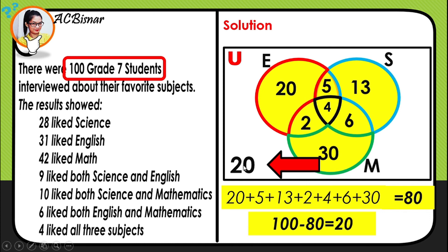We write the remaining 20 inside the universal set rectangle but outside all three circles, because these students were interviewed but did not choose any of the three subjects. That completes the Venn diagram. I hope you learned. Thank you.